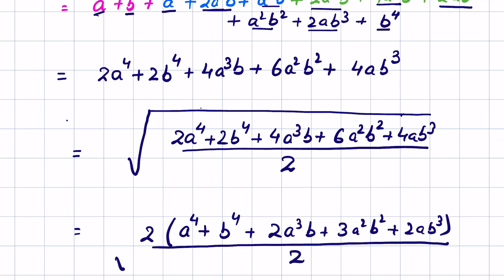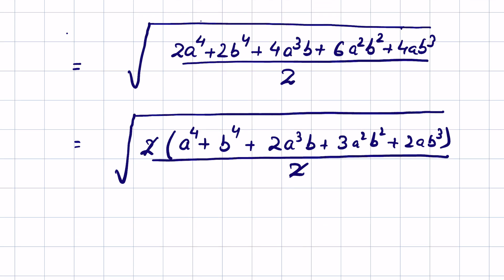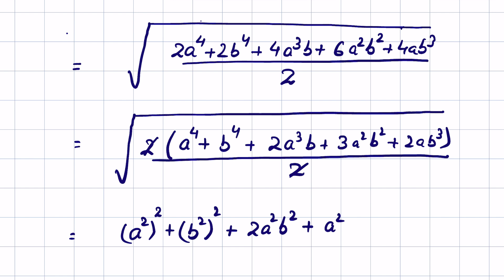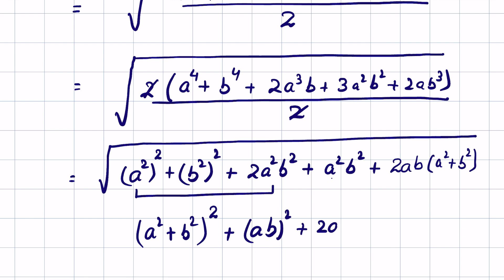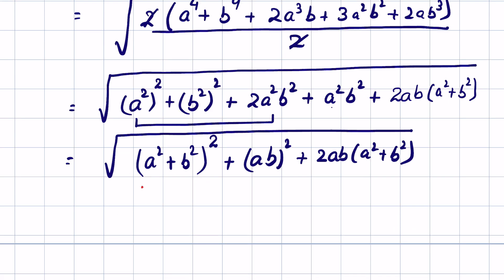The 2 in the numerator and denominator cancel. Now writing a⁴ as (a squared) whole squared, b⁴ as (b squared) whole squared, and 3a²b² as 2a²b² plus a²b², and 2a cubed b plus 2ab cubed as 2ab(a squared plus b squared), we can recognize the pattern: (a squared plus b squared) whole squared plus (ab) whole squared plus 2ab(a squared plus b squared).